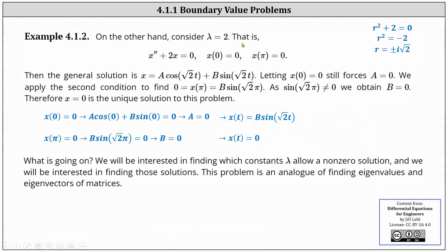Now let lambda equal two. Therefore, we have x double prime plus two x equals zero, with x of zero equals zero and x of pi equals zero. The characteristic equation is r squared plus two equals zero, where the roots are r equals plus or minus i square root two, indicating the general solution is x equals a cosine of square root two t plus b sine of square root two t. Letting x of zero equals zero forces a equal to zero, giving us x of t equals b sine of square root two t. Applying x of pi equals zero, we have b sine of square root two pi equals zero. Since sine of square root two pi is not equal to zero, b must also equal zero. Therefore, x of t must equal zero, which is the unique solution.